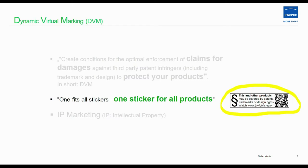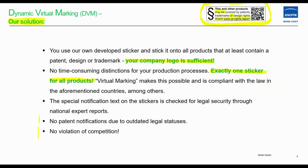During the customer days of Kramer and Hofman, I showed a one-fits-all sticker — one sticker for all products. Our solution is dynamic virtual marking: one sticker containing the text 'this and other products may be covered by patents, trademarks, or design rights — visit www.iprights.report.' You use our specially developed sticker and apply it to all products that contain at least one patent, design, or trademark. Your company logo is sufficient — no time-consuming distinctions for your production processes. Keep it lean.